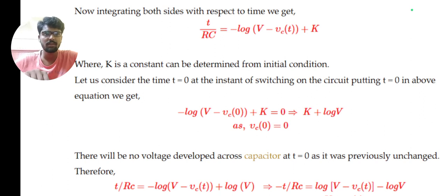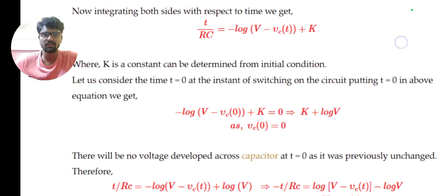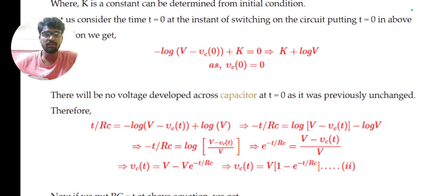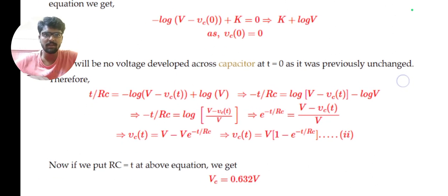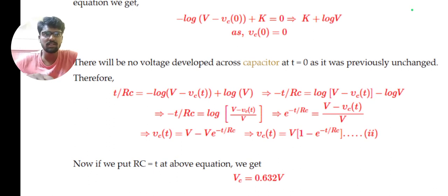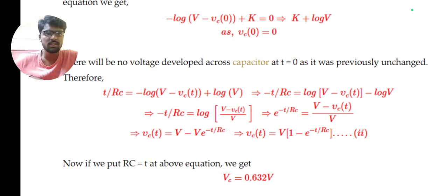Rearranging: dt/RC = dVc / (V − Vc). Integrating both sides with respect to time, we get t/RC = −log(V − Vc(t)) + K, where K is determined from the initial condition. At t = 0, the voltage across the capacitor is zero since it was previously uncharged. Substituting, K = log(V). At the end, log((V − Vc)/V) = −t/RC. If we put RC = τ (the time constant), we get Vc = 0.632·V.